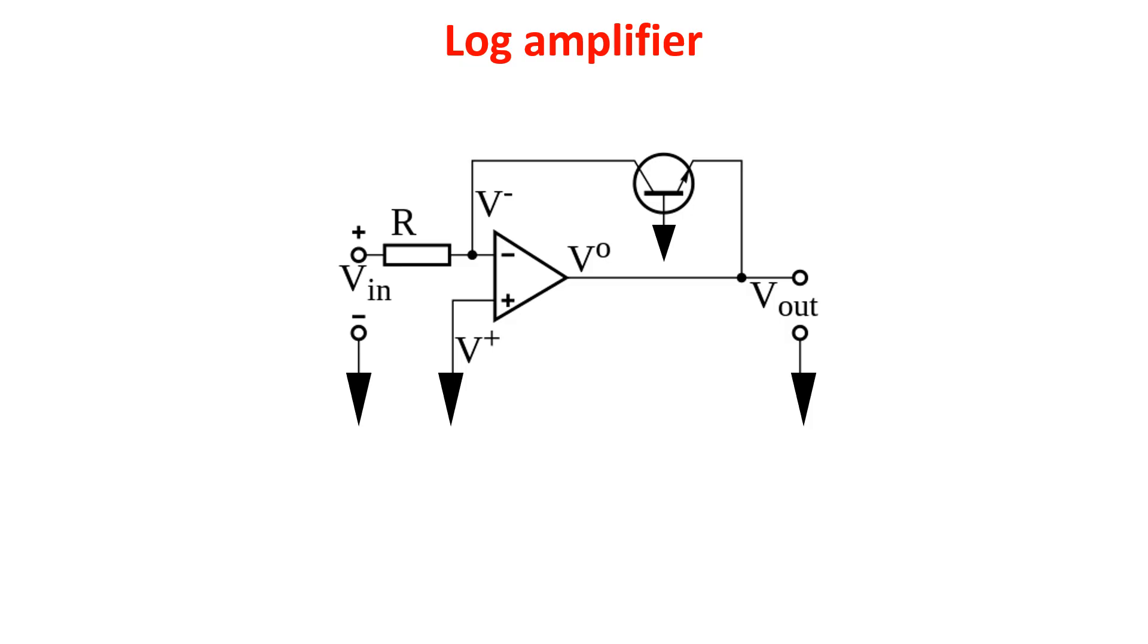So, with this configuration the base-emitter voltage of the BJT is equal to minus Vout. As we know from the BJT equation, the collector current is this, from which we get this other equation for Vbe.